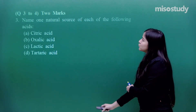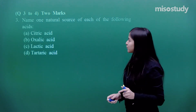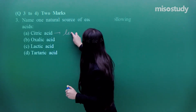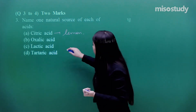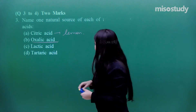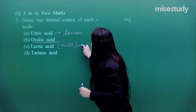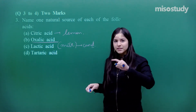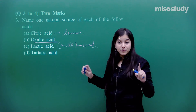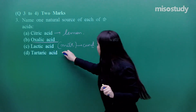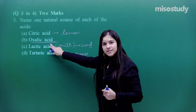Question number 3 is a 2-mark question: Name one natural source of each of the following acids. Citric acid — very easy — it's present in lemon and oranges. Lactic acid: from the word lactose you can correlate — lactose is milk — so it is present in milk or curd. When milk gets turned into curd, lactic acid is responsible for it. Tartaric acid is present in grapes, especially sour unripe grapes. Oxalic acid is found in tomatoes. Each part carries half a mark.